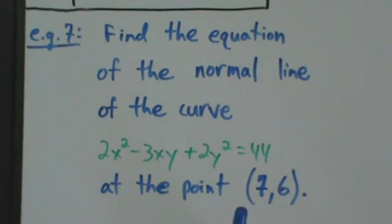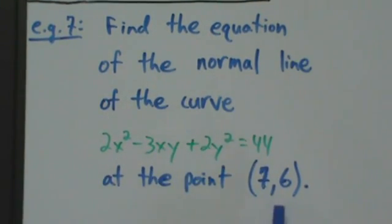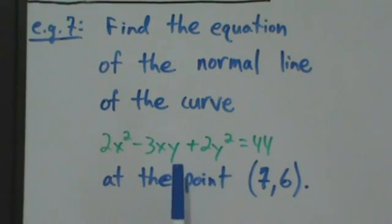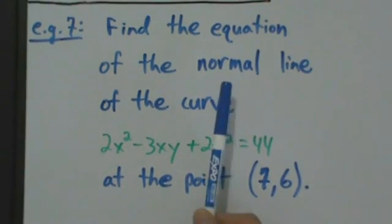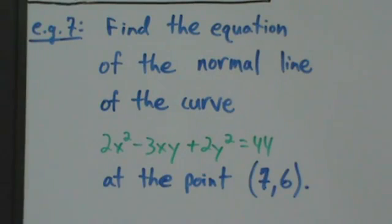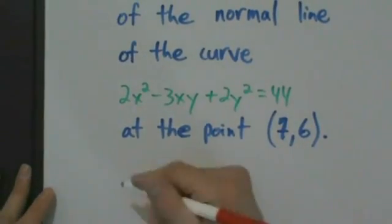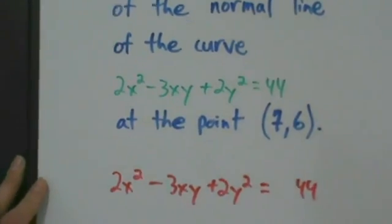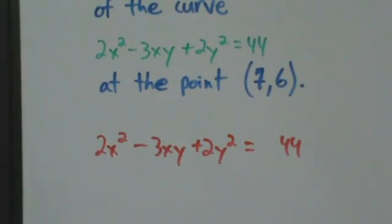The process is almost identical. The only extra step is when we find the value of the derivative at the point (7, 6), we have to find the negative reciprocal so that we have the slope of the normal line. The derivative gives us the slope of the tangent line, but since the normal line is perpendicular to the tangent line, we take the negative reciprocal. For now, let's start by finding the derivative using implicit differentiation of 2x squared minus 3xy plus 2y squared equals 44.